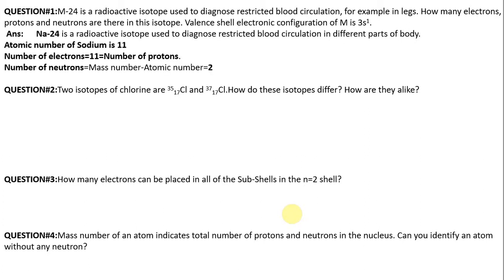The mass number is 24, so the number of neutrons is mass number minus atomic number: 24 minus 11 equals 13. So the number of neutrons is 13. The electronic configuration for sodium is 1s2, 2s2, 2p6, 3s1.